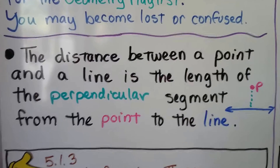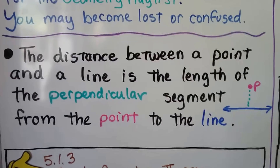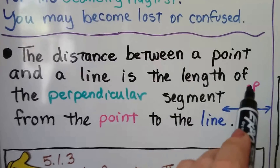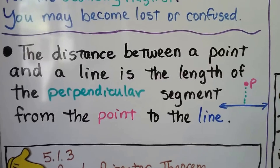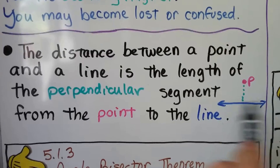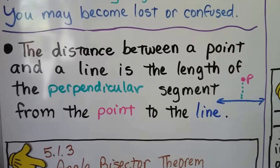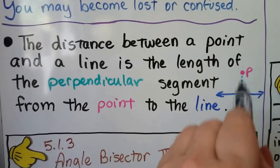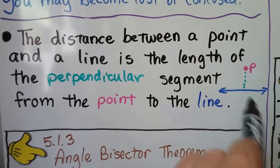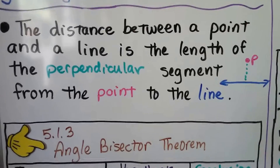The distance between a point, like this pink P here, and a line, this blue line, is the length of the perpendicular segment from the point to the line.